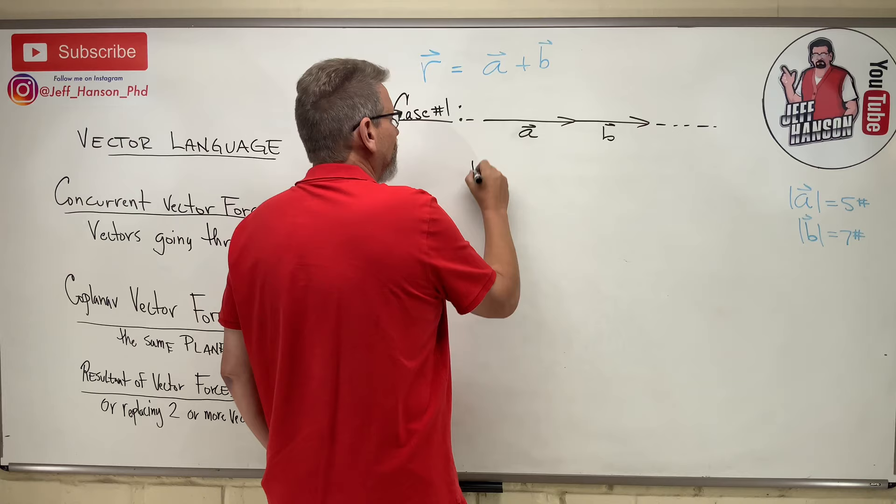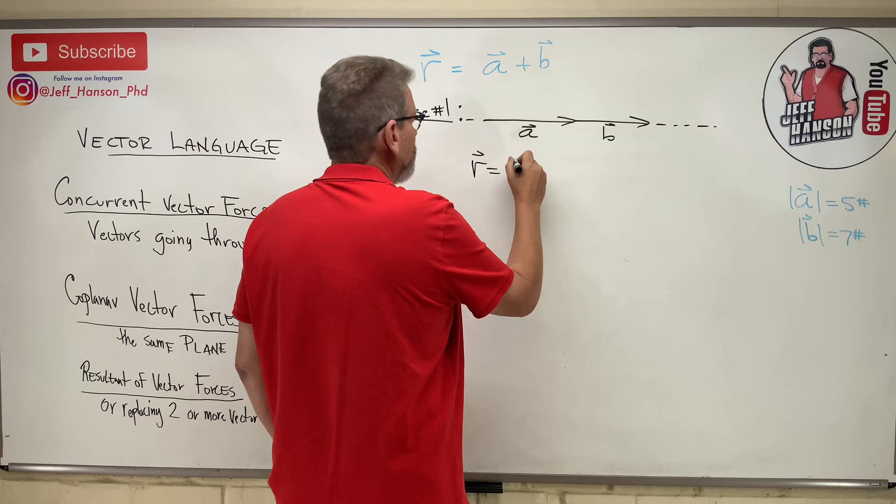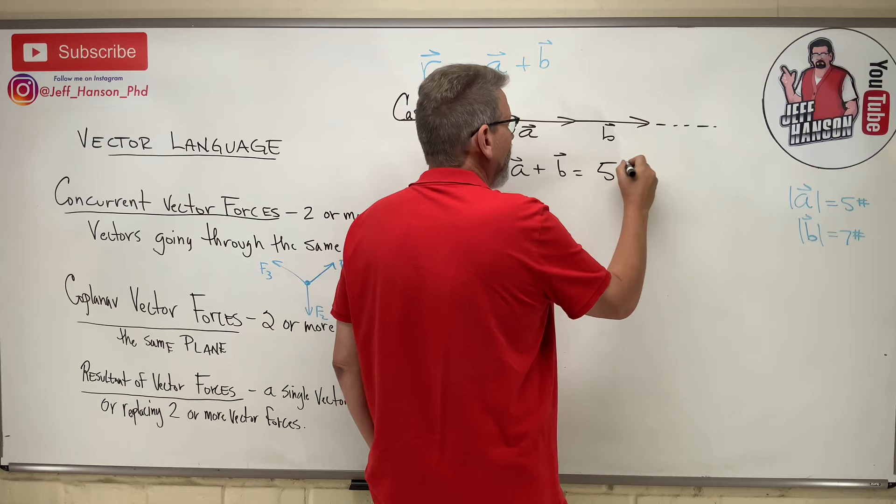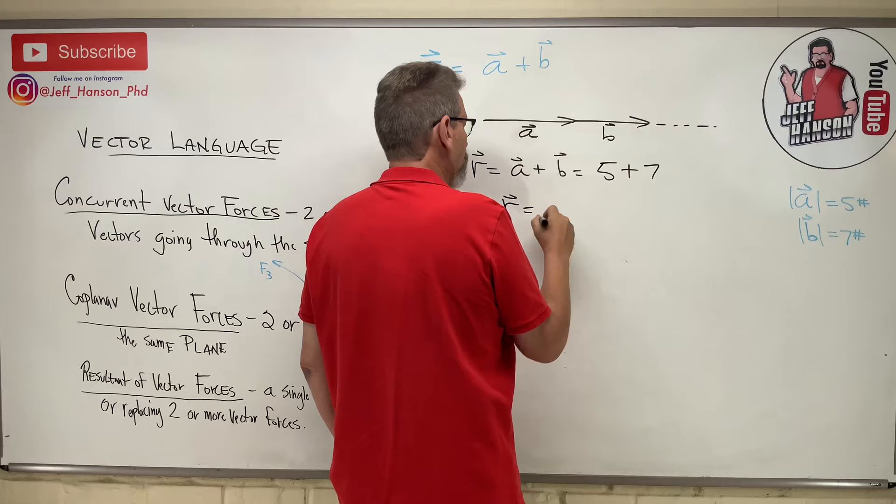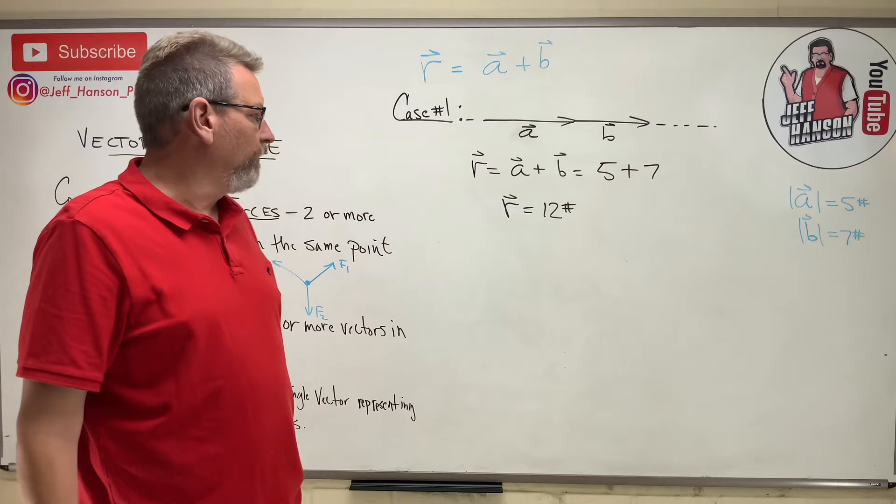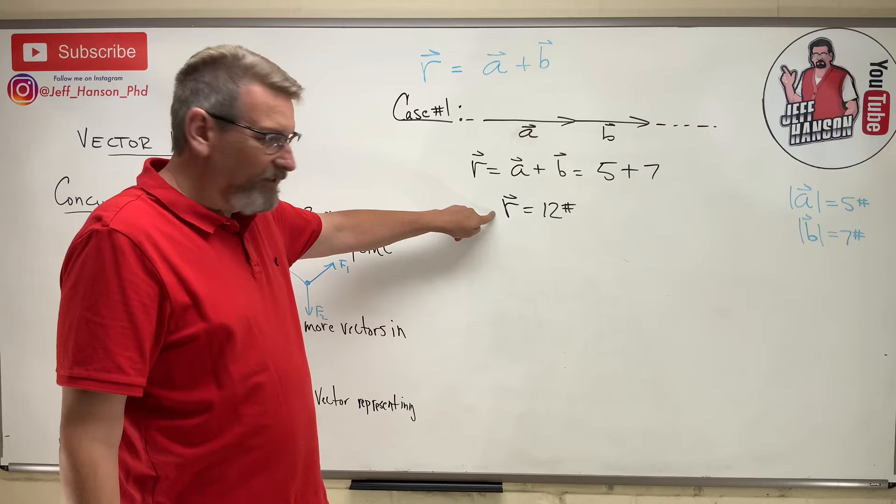So in this case, vector R is equal to, well, let's vector A plus vector B, which is just add them together. Five plus seven. So vector R is equal to nine plus seven, 12. Remember hashtag is pounds. So 12 pounds. Is that right?